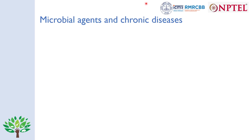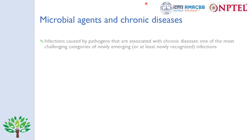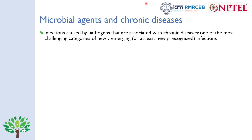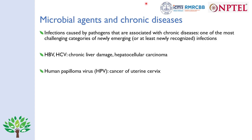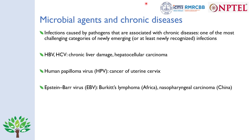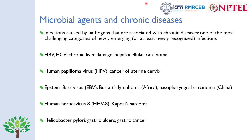For certain chronic diseases, we knew the disease well — cancers, ulcers — but didn't know that microbial agents could cause them. Infections caused by pathogens associated with chronic diseases represent one of the most challenging categories of newly emerging infections. Examples include hepatitis B and C causing chronic liver damage and hepatocellular carcinoma, human papillomavirus causing cervical cancer, Epstein-Barr virus causing Burkitt's lymphoma and nasopharyngeal carcinoma, human herpesvirus 8 causing Kaposi sarcoma especially in AIDS patients, and Helicobacter pylori causing gastric ulcers and gastric cancers.